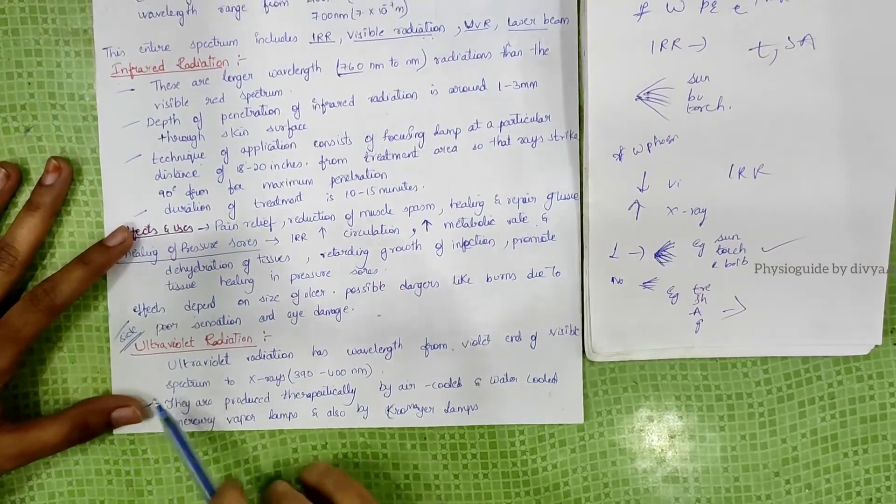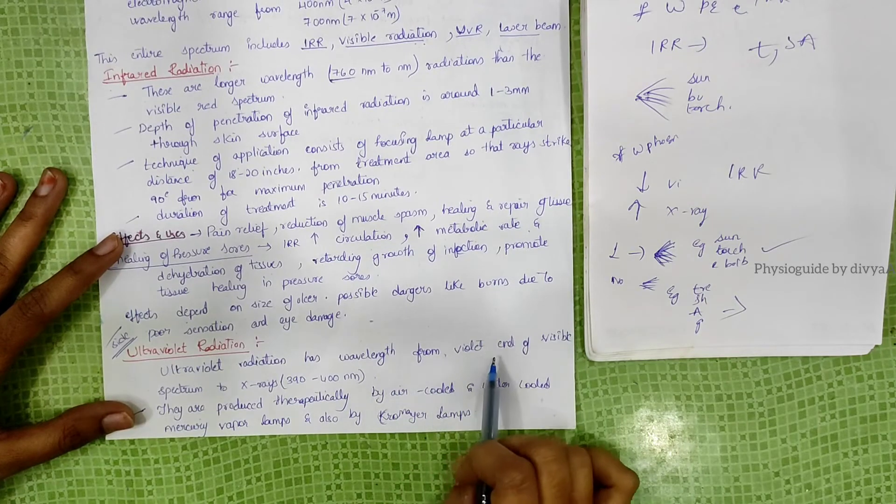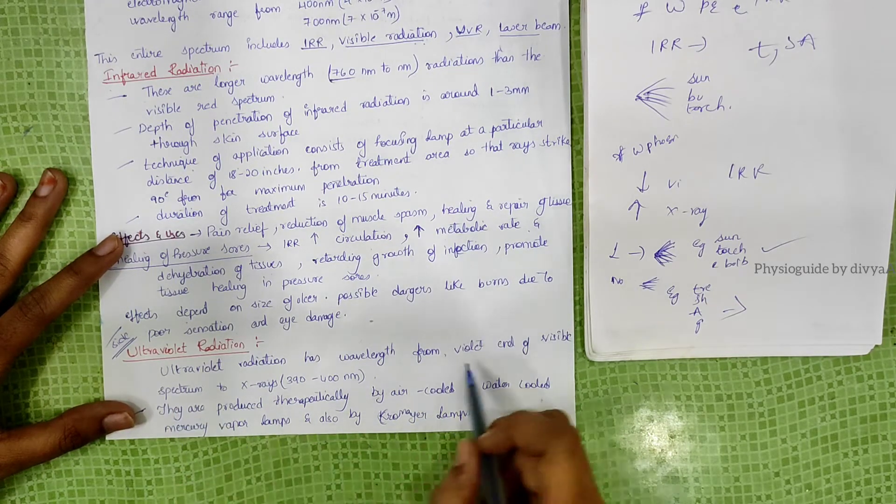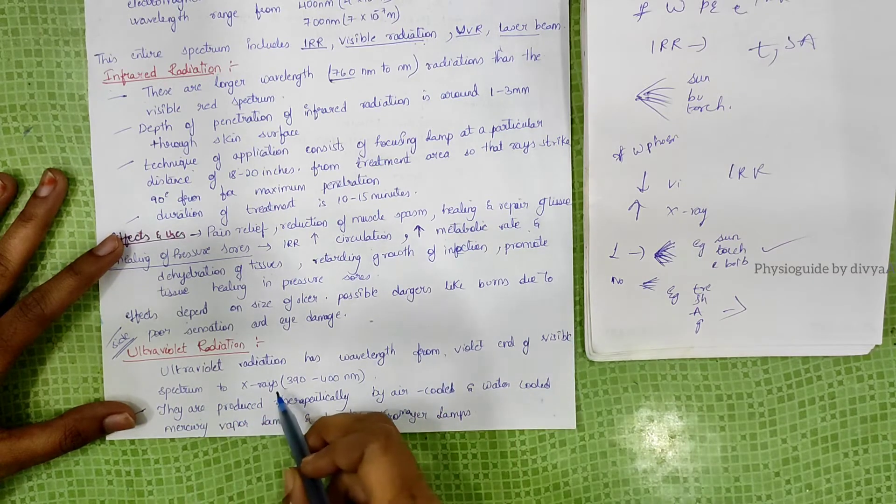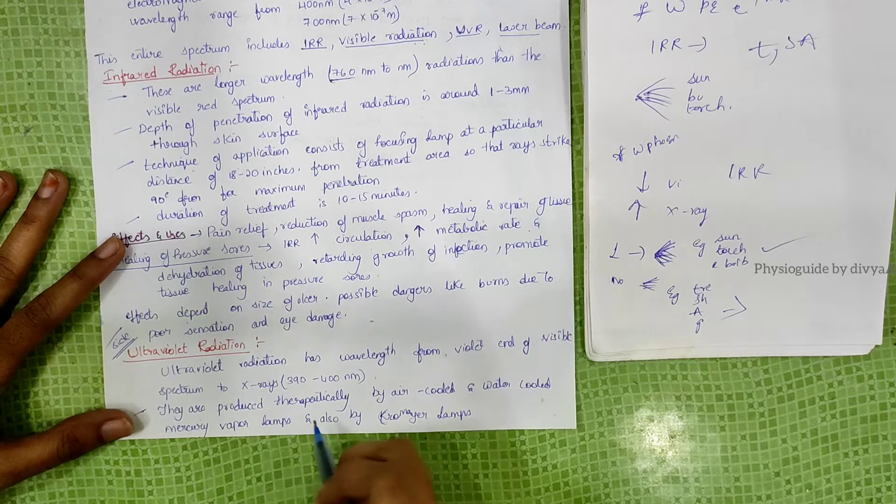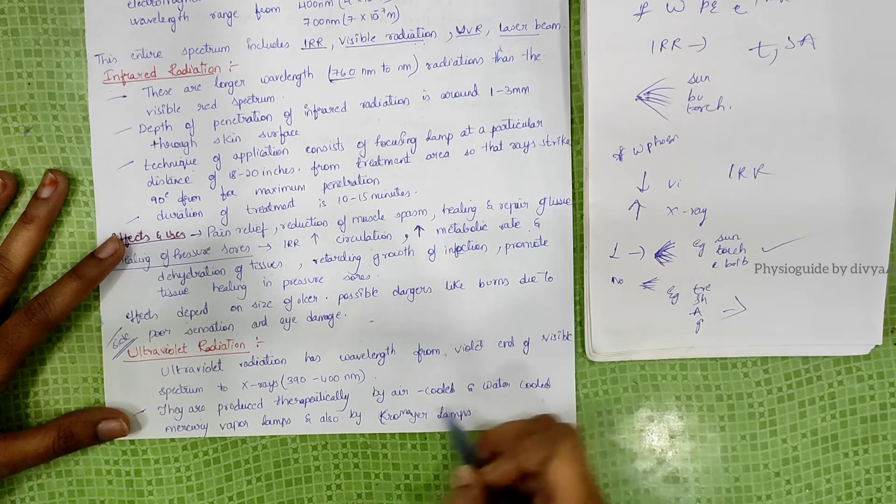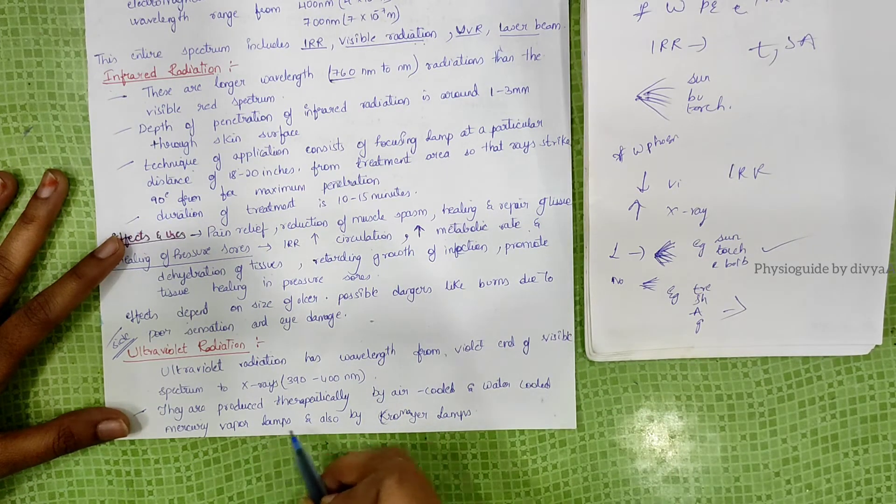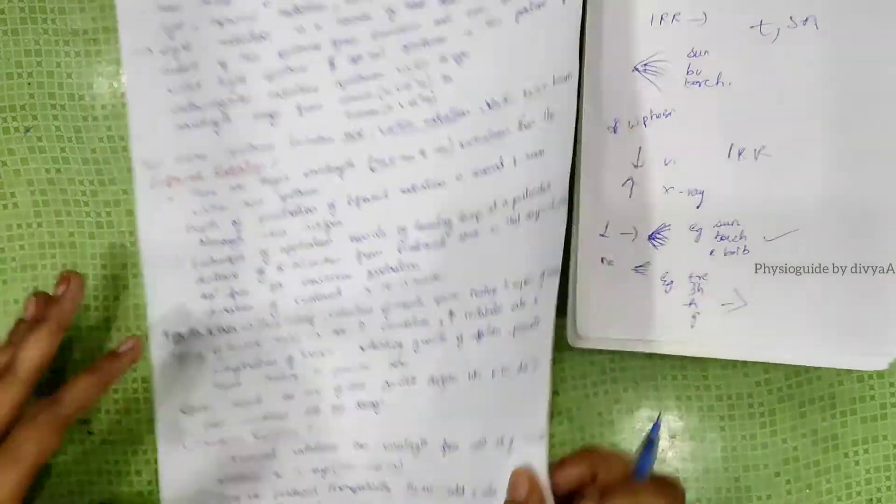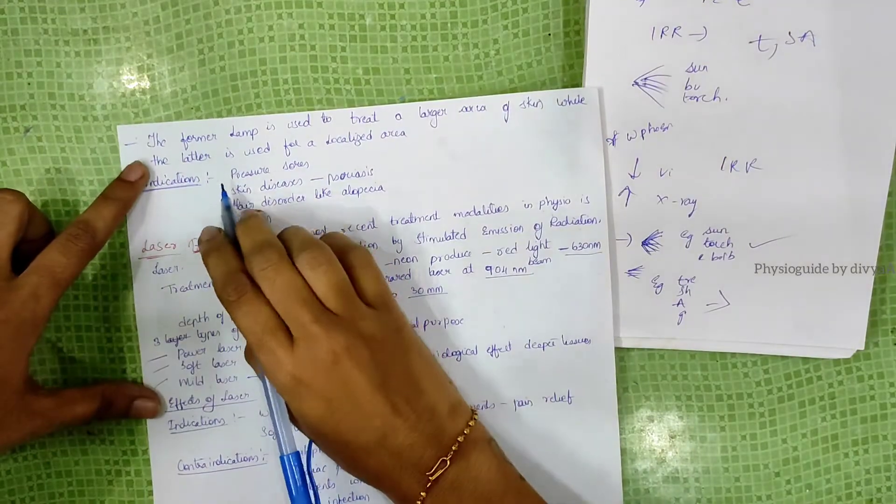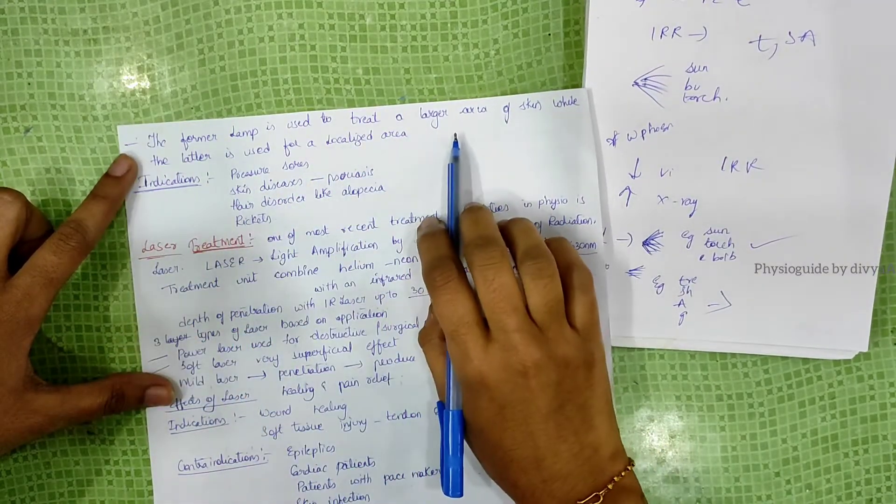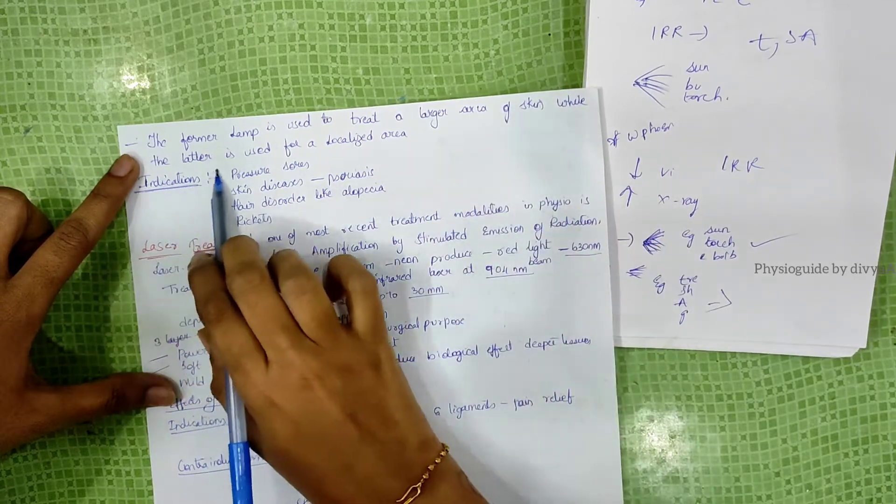Ultraviolet radiation has wavelength from the violet end of visible spectrum to x-rays, between 390 to 400 nanometers. They are produced therapeutically by air-cooled and water-cooled mercury vapor lamps, and also by chromium lamps. The former lamps are used to treat large areas of skin, while the latter is used for localized areas.